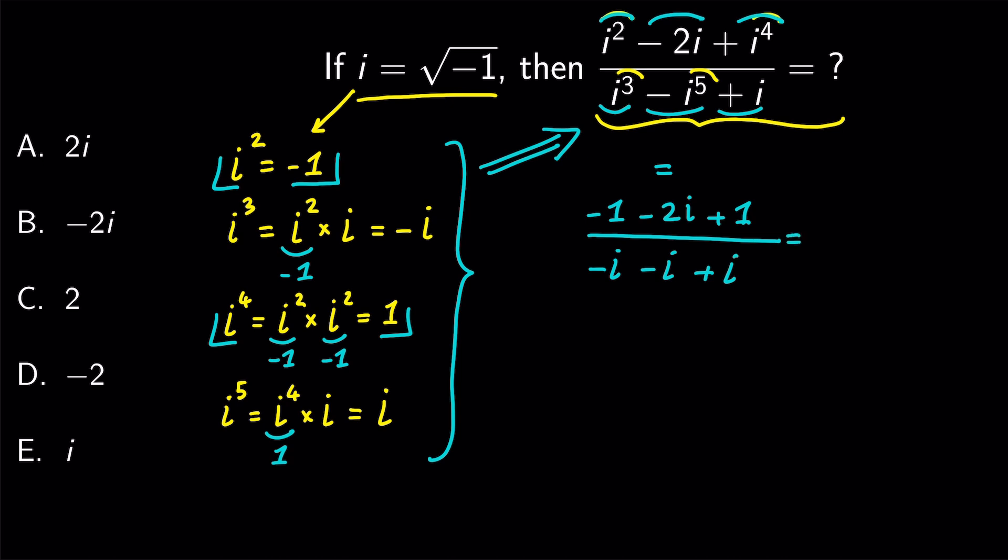Let's simplify this fraction. Minus 1 plus 1 is 0, minus i plus i is 0. We divide the numerator and denominator by i. And finally, we get minus 2 divided by minus 1 is 2, and that's it. The answer is c.